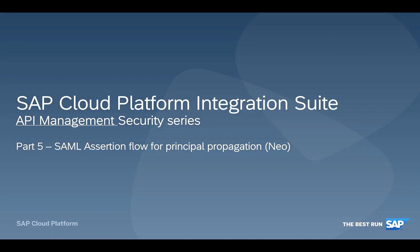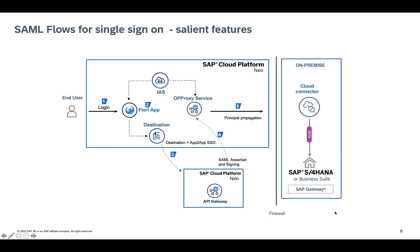Hi, this is Vinayak Utkoli from the SAP Cloud Platform Integration Suite product management team. This is part 5 of the video series on API management security. In this part, we look at the SAML assertion flows for principal propagation, as opposed to the OAuth flow that we did in the previous part. Now let's look at how the single sign-on flow via SAML policies can be modeled in API management.